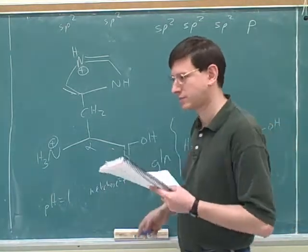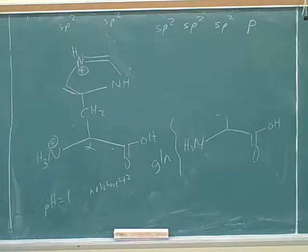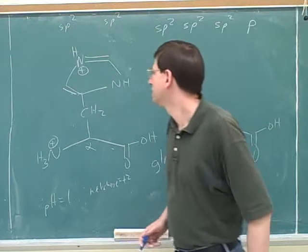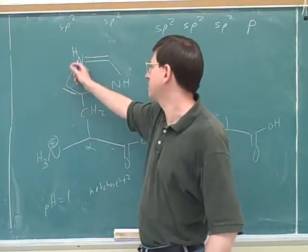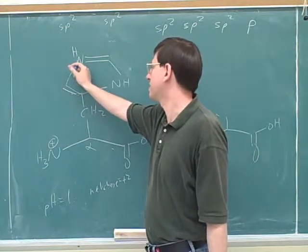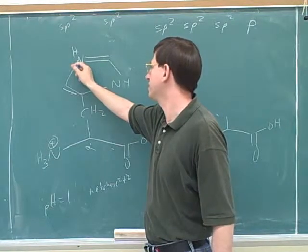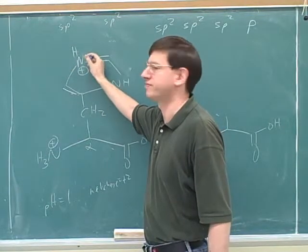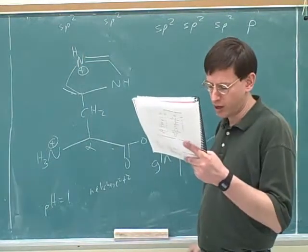Just to confirm — it's this nitrogen, the one not connected, that's the basic one. That's right. This is the nitrogen with a lone pair not part of the pi structure, because the other nitrogen is already using its pi orbital for the pi bond.